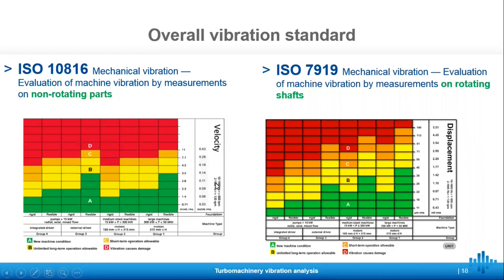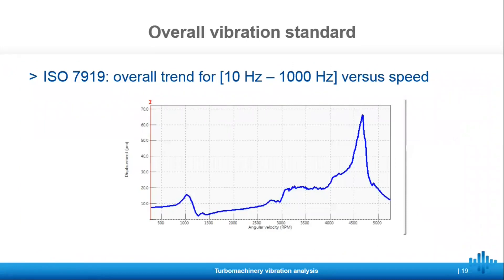For ISO 7919, the table is very similar — the bottom row with groups, machine type, and foundation are the same, and the frequency range is the same too. The one difference is that the y-axis now shows displacement, either in microns or mils, instead of velocity. These velocity and displacement values are easily calculated from your accelerometer data using the integration filters. You can also see an example of the overall trend of displacement from 10 to 1000 Hz plotted against rotation speed, which is the first relevant result we want to get from the turbo machinery at transient speeds.